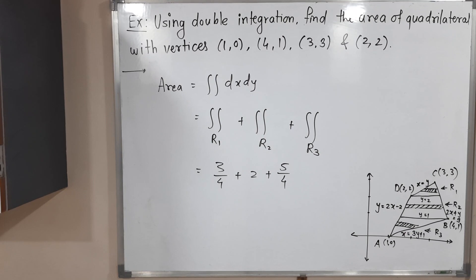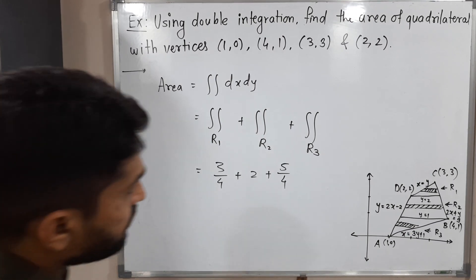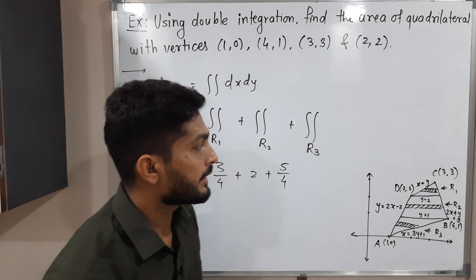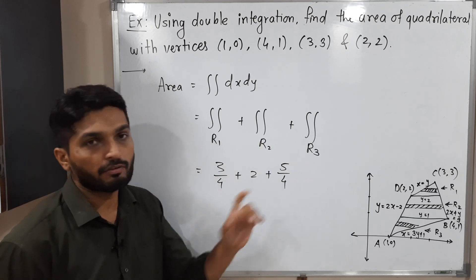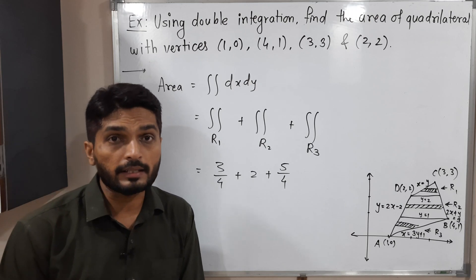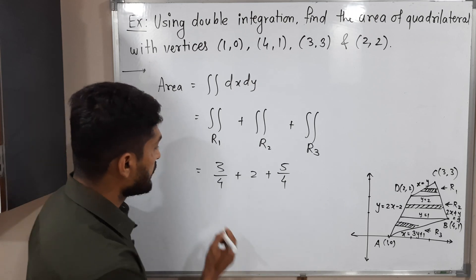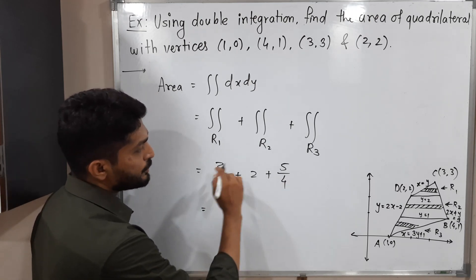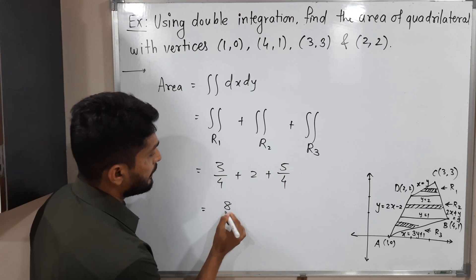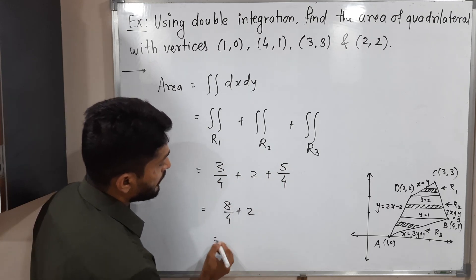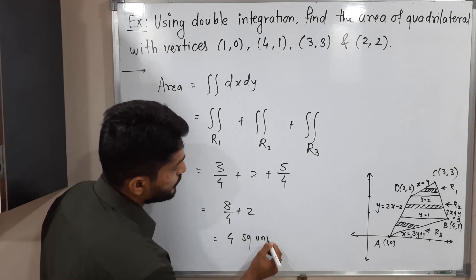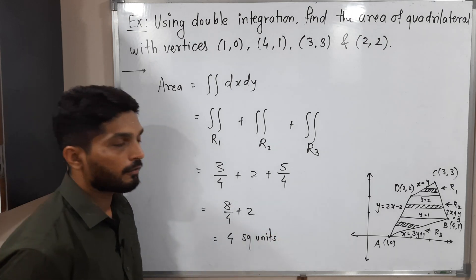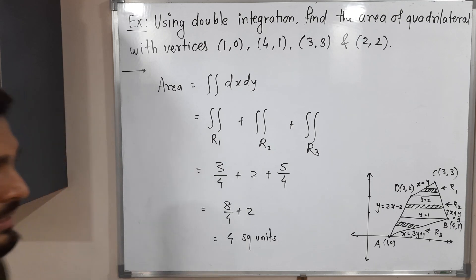The area of the given quadrilateral is the sum of the three regions: R1 + R2 + R3 = 3/4 + 2 + 5/4 = 3/4 + 8/4 + 5/4 = 16/4 = 4 square units. This is the required area of the given quadrilateral.